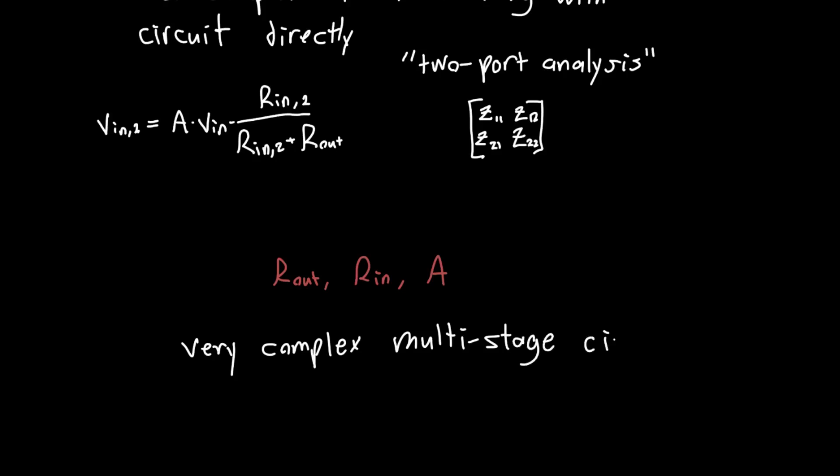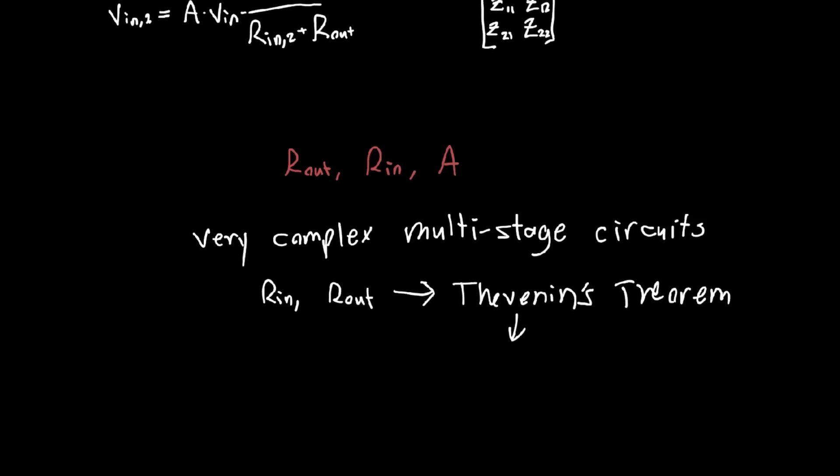And you might ask, well, how do we actually calculate these values, R_in and R_out? How do we calculate these magical values? And the answer I'll go over in a future video, but we use Thevenin's theorem. And we actually use a simplified version of Thevenin's theorem with no independent sources, which leads to the idea of Thevenin resistance.